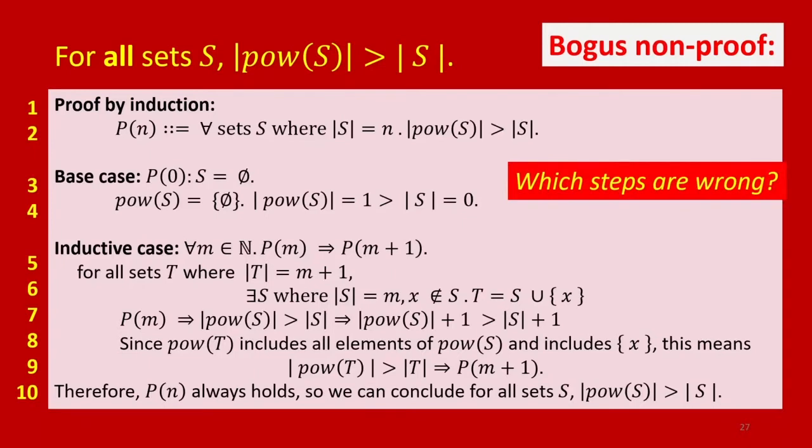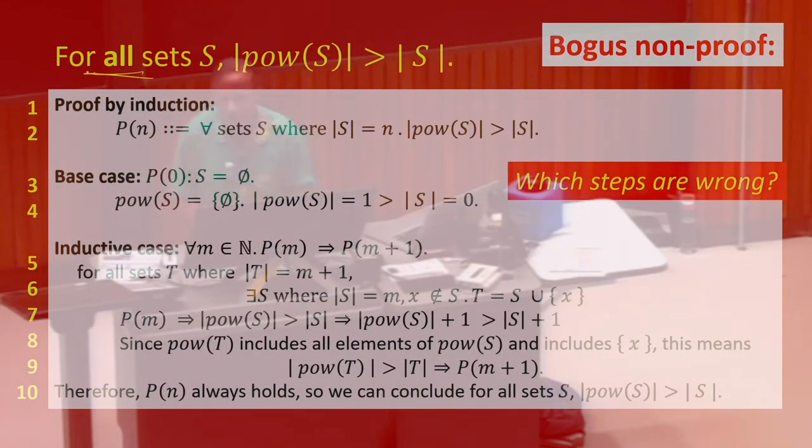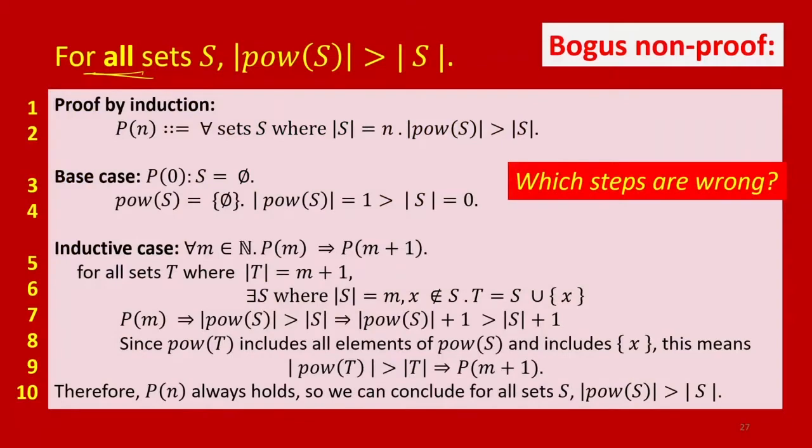I want you to think about which steps, and there's more than one, of this proof are invalid if we're claiming that we're not restricting it to finite sets. If we want to prove this now, instead of just for finite sets, we want to prove this for all sets, no restriction on them being finite, so including all the infinite sets. Which lines are wrong?